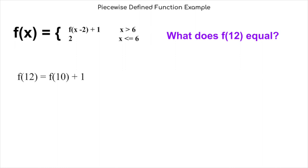In order to find f of ten, we can simplify even more. Ten is greater than six, so we must plug it into the first equation. We now know that f of ten is equal to f of eight plus one. Again, we can simplify to find f of eight. Because eight is greater than six, we can plug it into the first equation, and we get that f of eight equals f of six plus one.